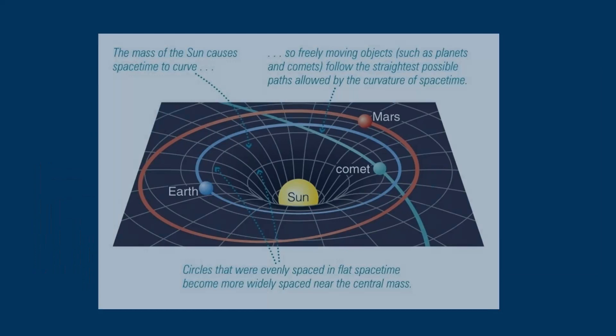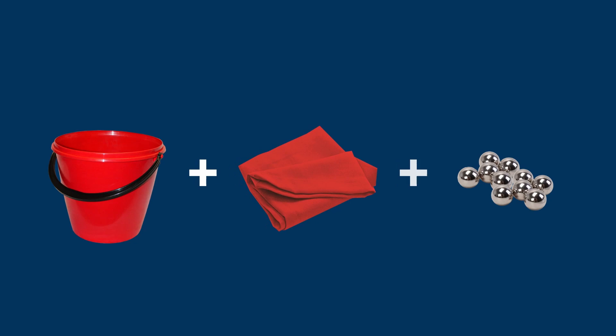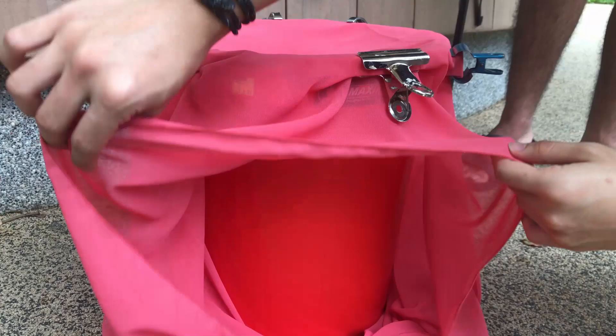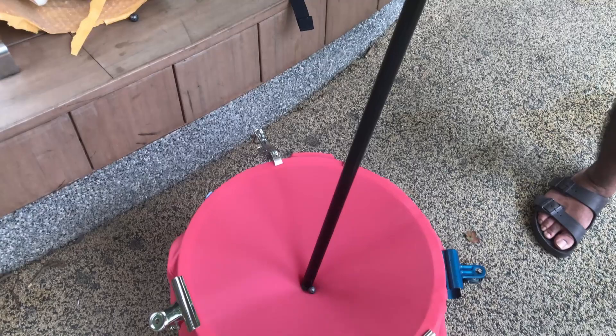Our experimental model is based on Einstein's space-time continuum theory. Massive objects like the Sun can cause the space-time continuum to warp drastically, which causes planets around the Sun, such as the Earth or Mars, to orbit, allowed by the curvature of space-time. To simulate the fabric of space-time, we use a bucket covered with a piece of cloth and some metal balls, and we use a large stick to warp the fabric, simulating the gravity of something massive like the Sun.